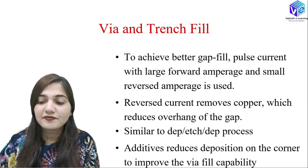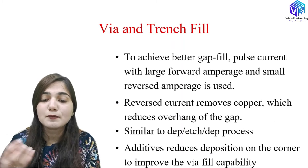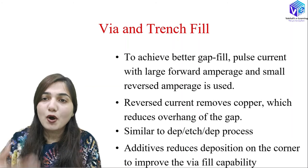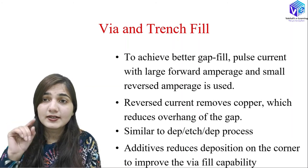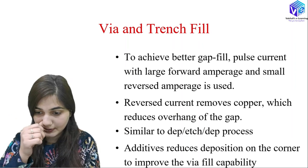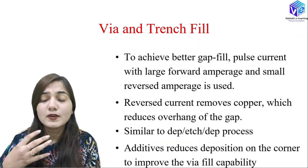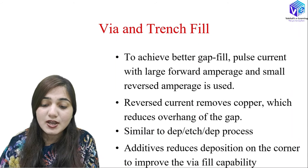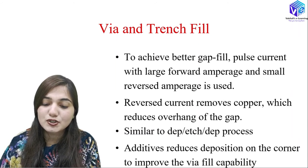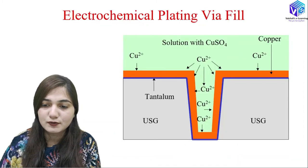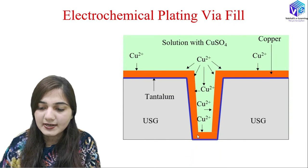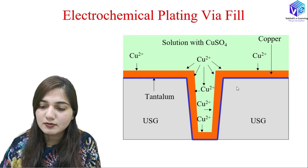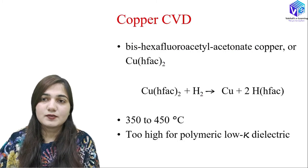To achieve better gap fill in vias and trenches, pulse current with large forward amperage and small reverse amperage is used. The forward current drives copper ions in the desired direction, while the reverse current removes excess copper and reduces overhang at the gap opening. Additives can also be used to reduce corner deposition and improve via fill capability. We can see the tantalum barrier layer, followed by the copper seed layer, and the electrochemical plating filling the via hole.